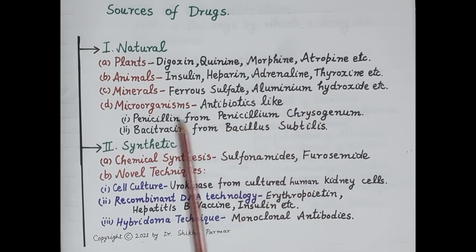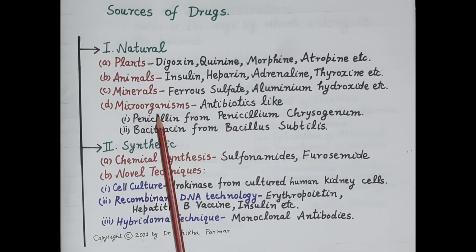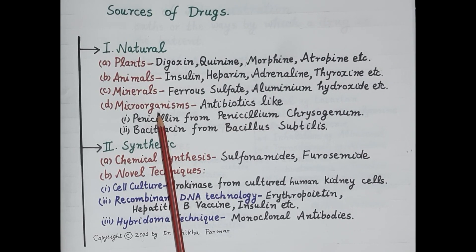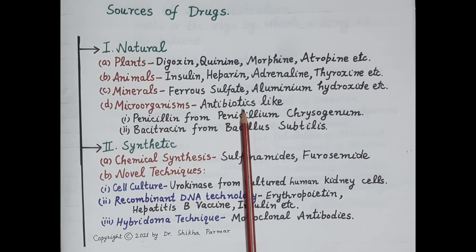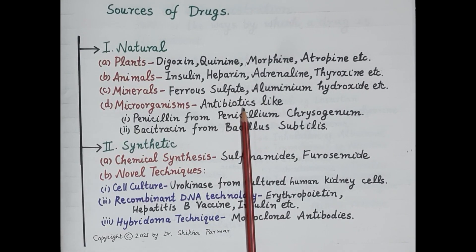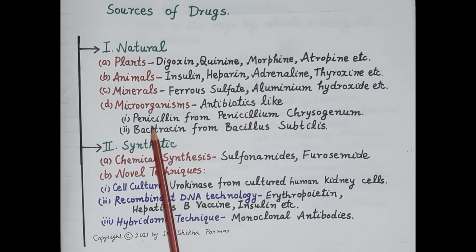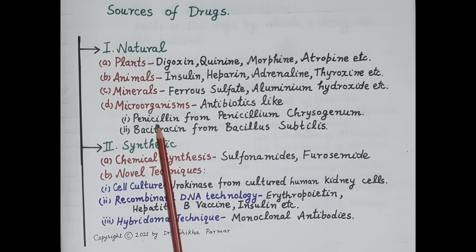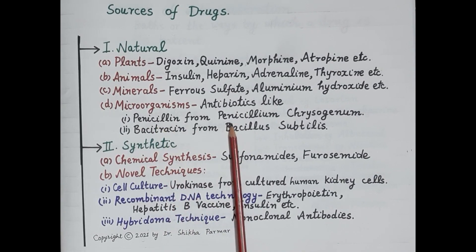The fourth natural source of drugs is microorganisms — like bacteria, fungi, etc. A very good example of a drug obtained from microorganisms is the antibiotic. Antibiotics are antibacterial agents, and they are actually derived from microorganisms.